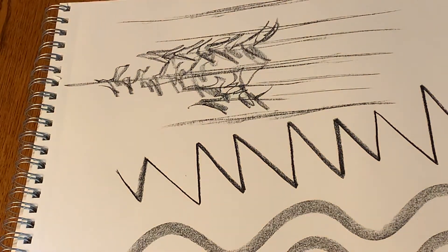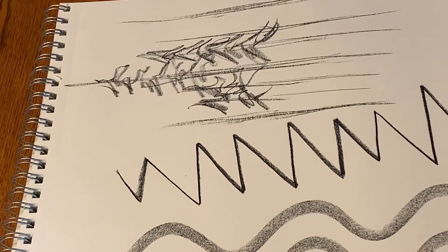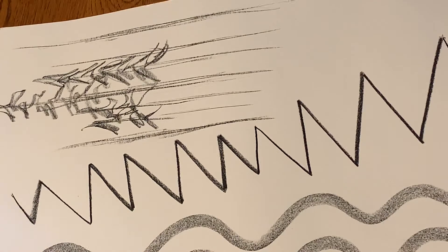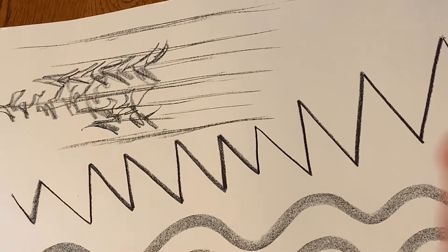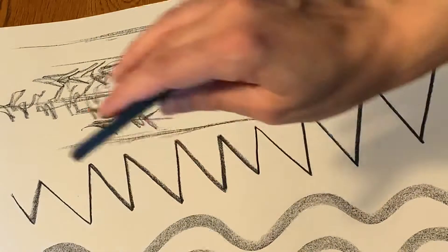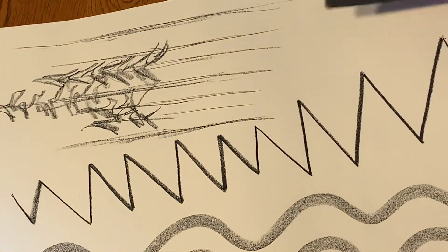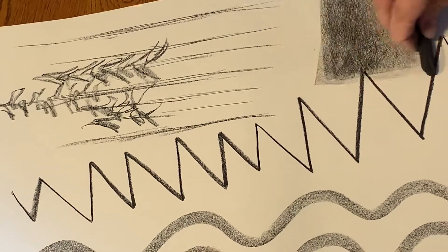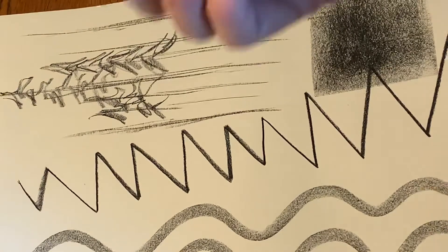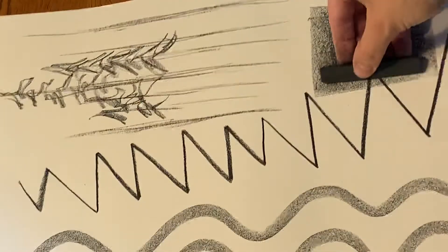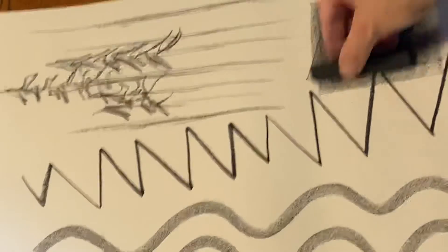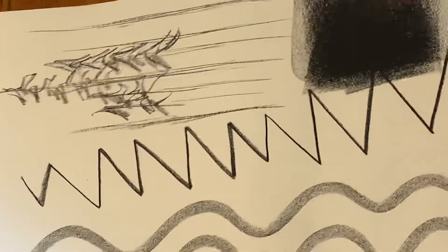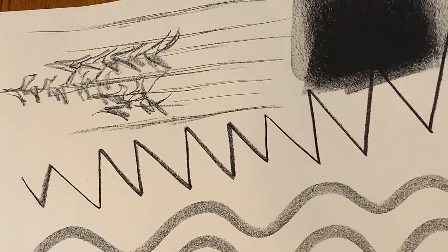One last really cool line I'm going to show you with charcoal is kind of working backwards. You can actually create lines from removing material. All these I've been adding material to the paper. For this one, I'm just going to start off with laying down a nice layer of charcoal, just using this edge here to make a nice layer.